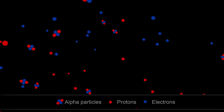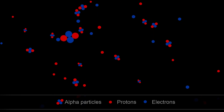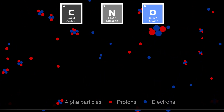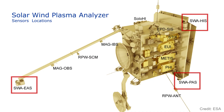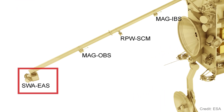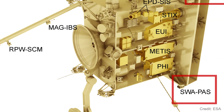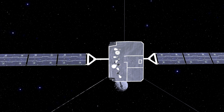The solar wind primarily consists of electrons, protons, and alpha particles. There are also trace amounts of ions of heavier elements such as carbon, nitrogen, oxygen, and many more. Because ions and alpha particles behave differently than electrons, due in part to orders of magnitude difference in mass, SWA is actually composed of three different sensors located at various locations on the spacecraft. In order to keep this video to about 10 minutes, I'm only going to talk about the Electron Analyzer System, EAS for short. The other two sensors of the SWA operate in a somewhat similar way, but are designed to respond to protons and heavy ions instead of electrons in the solar wind.